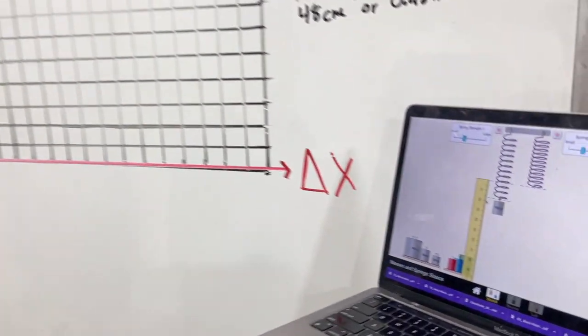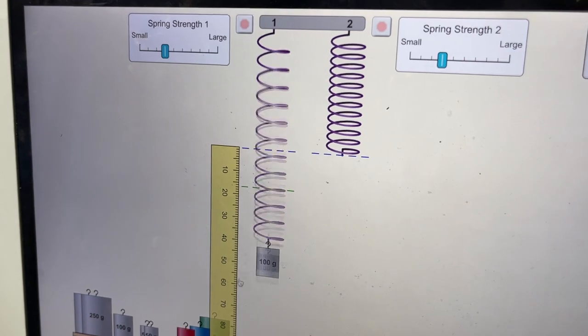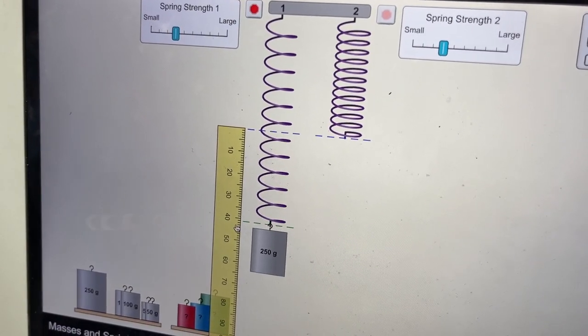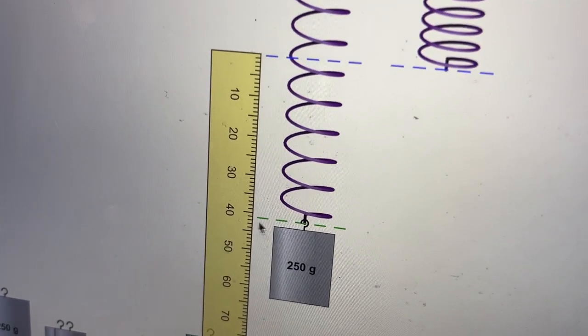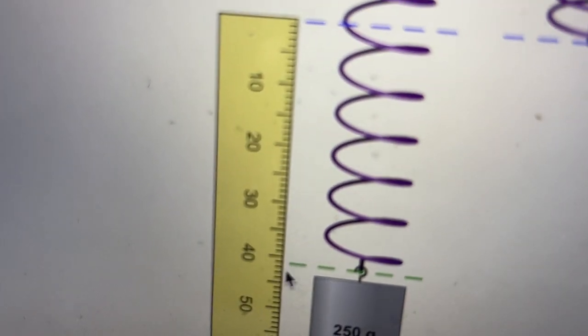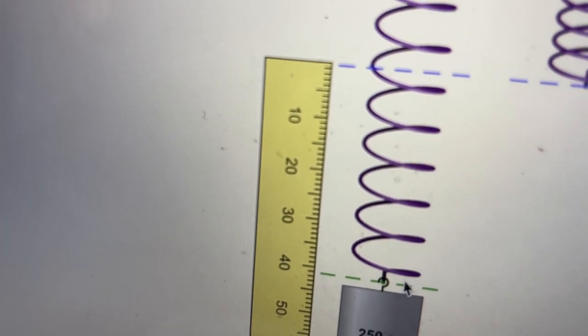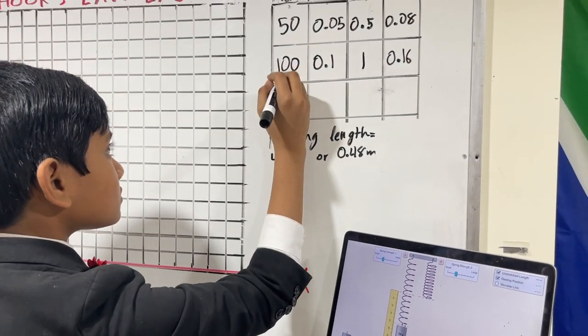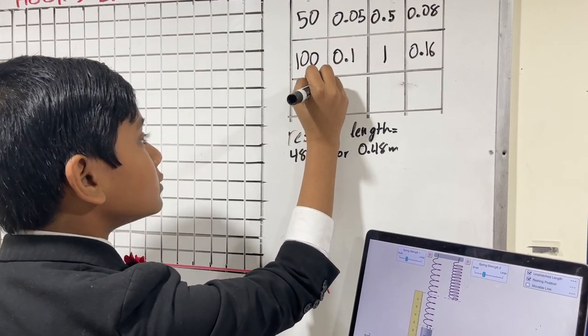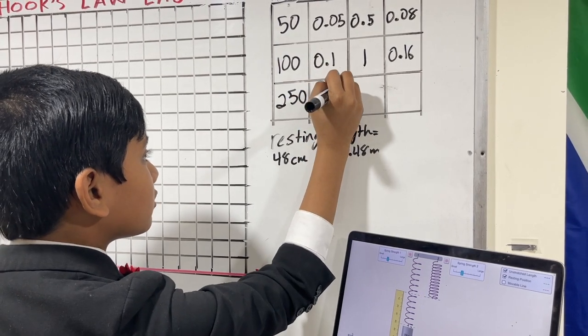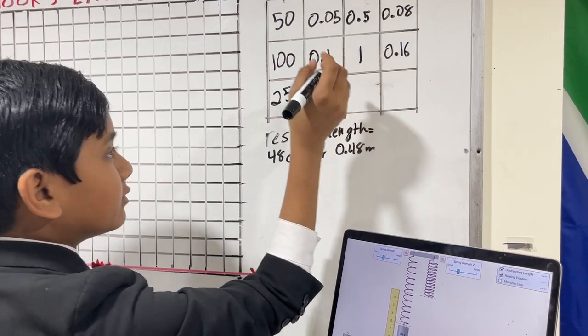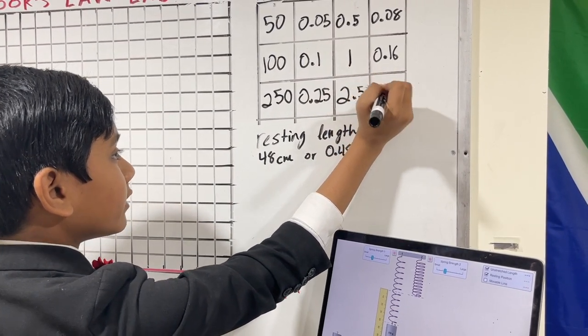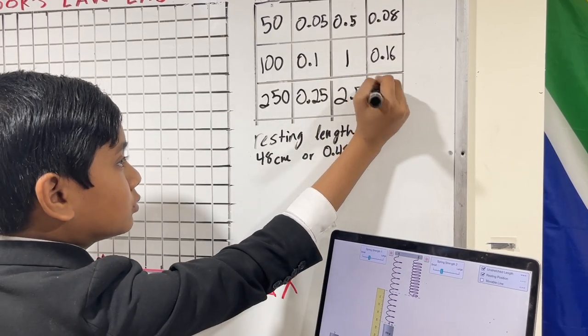So, we have 100 grams. m is 0.1 kilogram, because we have to divide 100 by 1,000 to convert from grams to kilograms. mg would be multiplying by g, which is 10, so it's 1 newton. And delta x, as we have seen here, is 16 centimeters, or 0.16 meters. So now, let's drop a 250 gram onto the spring.